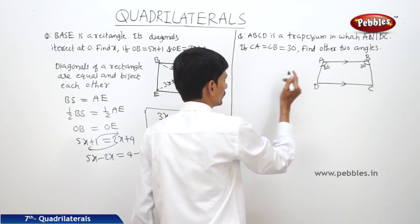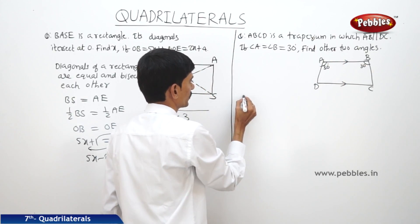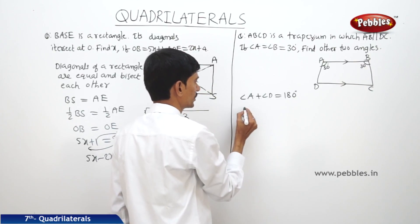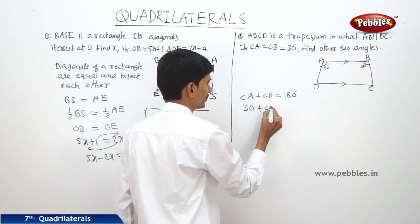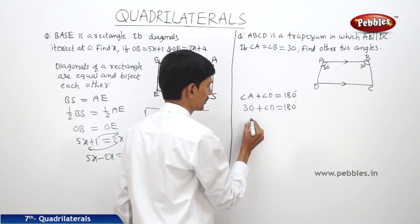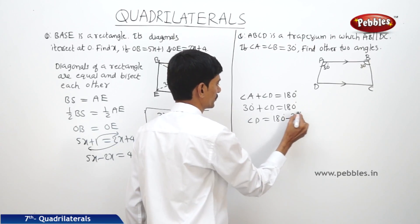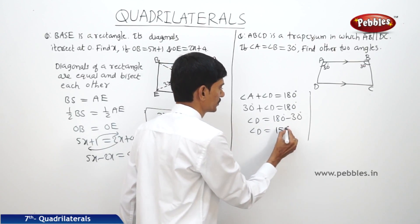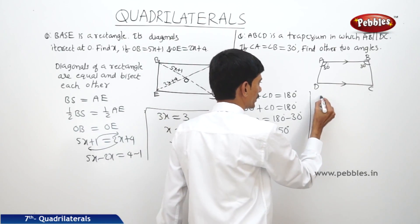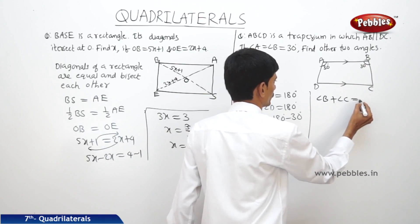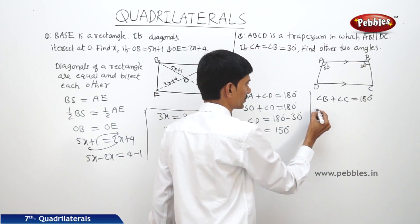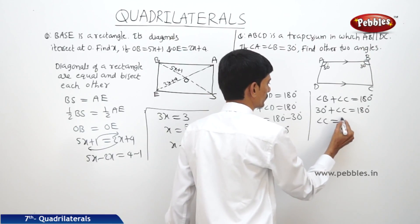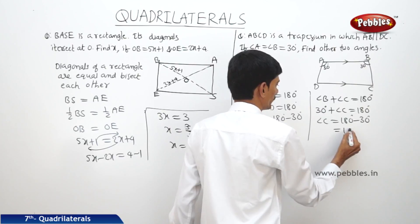Since AB is parallel to DC, angle A plus angle D equals 180 degrees. So angle D equals 180 minus 30 degrees, which is 150 degrees. Similarly, angle B plus angle C equals 180 degrees, so 30 plus angle C equals 180 degrees, and angle C equals 180 minus 30 equals 150 degrees.